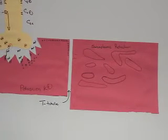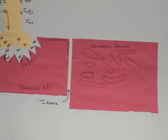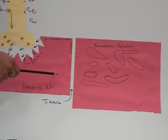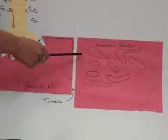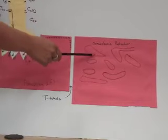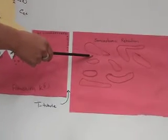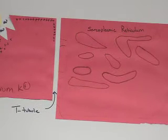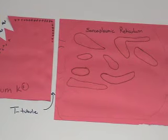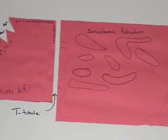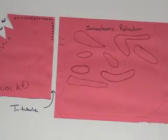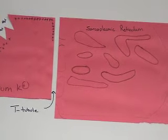The action potential has traveled down the sarcolemma and into a T-tubule, and stimulates the release of calcium from the terminal cisternae of the sarcoplasmic reticulum, where it has been sequestered by calsequestrin, into the sarcoplasm of the muscle cell.